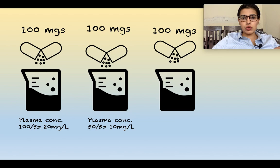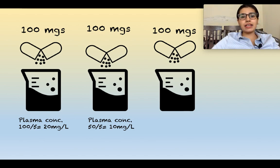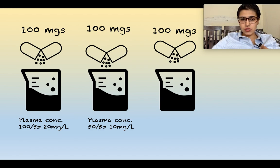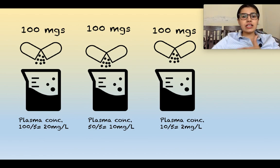In the third scenario, a similar dose of 100 mg is given, but instead of fishes there is a crocodile in the beaker. The crocodile takes up around 90 mg of the drug, so only 10 mg is left behind. The plasma concentration in this beaker comes out to be 10 mg divided by 5 liters, which equals 2 mg/L.